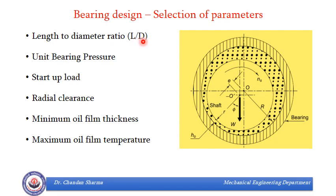First is length to diameter ratio. The diameter of journal is being given to us; our job is to find what will be the length of the bearing that can take up the load. Second is unit bearing pressure — it is load divided by projected area, which is length of bearing times diameter of journal. Third is startup load, which is stationary load.